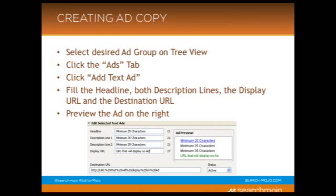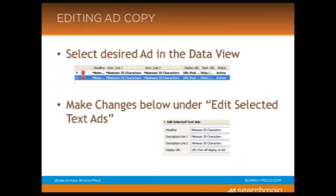You can also see, right in between where you fill in the ad and where the ad preview is, the character counts for your headline, description line, and everything else. So you can keep track of whether you're on track with those, and it will give you a little alert if you're over the allotted amount of characters. With editing ad copy, you're just going to select the desired ad in the data view, and it's going to appear just like it does when you create the ad — you're just going to edit it to say what you want the ad to say. You'll be able to see the preview and everything, just like creating the ad.